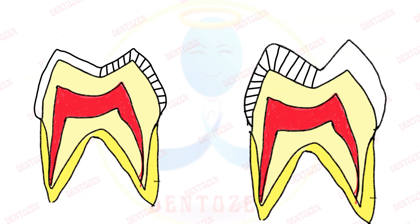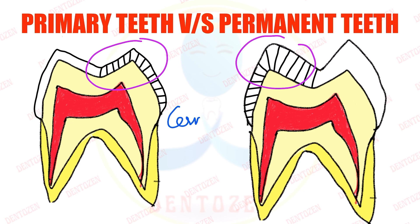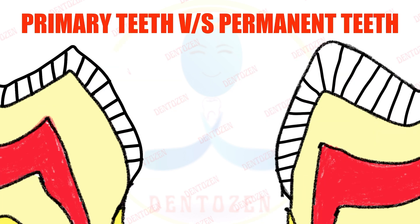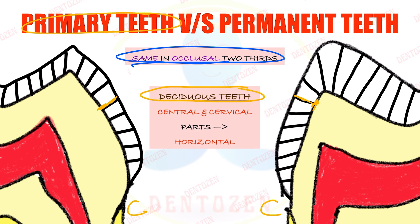Now, what is the difference in rod direction between primary teeth and permanent teeth? In the occlusal two-thirds the direction is almost the same for both — rods are starting from the dentine going outwards. The difference is in the cervical region. In deciduous or primary teeth, the rods in the cervical region run in a horizontal direction, starting from the dentino-enamel junction towards the enamel surface.